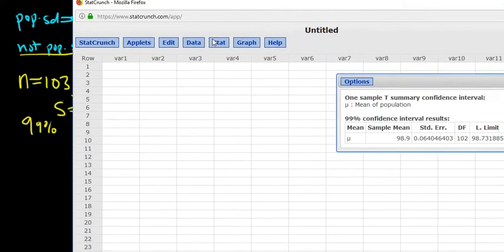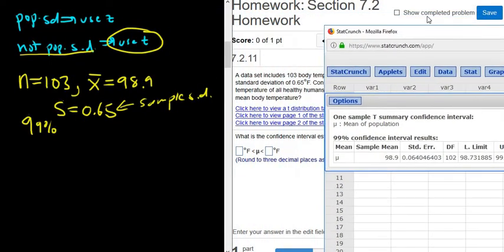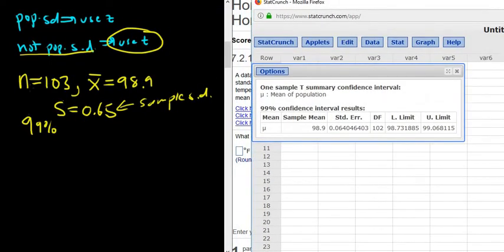There it is. It's the lower limit and the upper limit, and it wants three decimals. So I'm going to write it down. 98.732, right? Because the 8 makes the 1 a 2 because you round up.